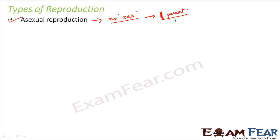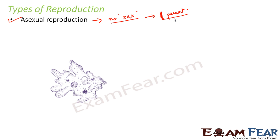This type of reproduction is mostly seen in simpler organisms. For example, amoeba is one such example. Amoeba is a unicellular protozoa, and here you see an asexual mode of reproduction — there is no female or male amoeba, and it can just split to form new organisms.